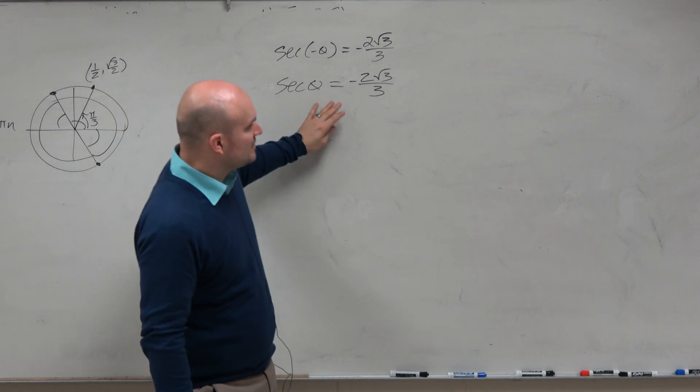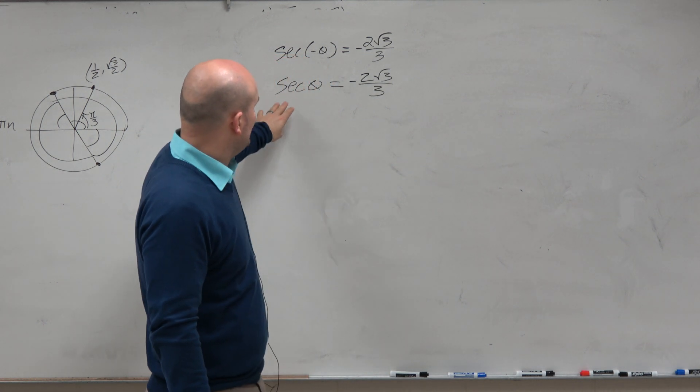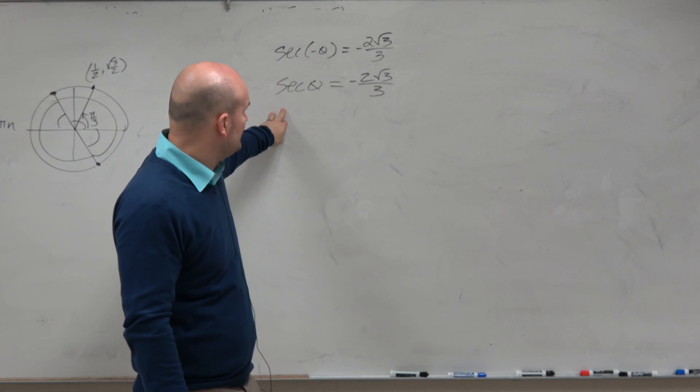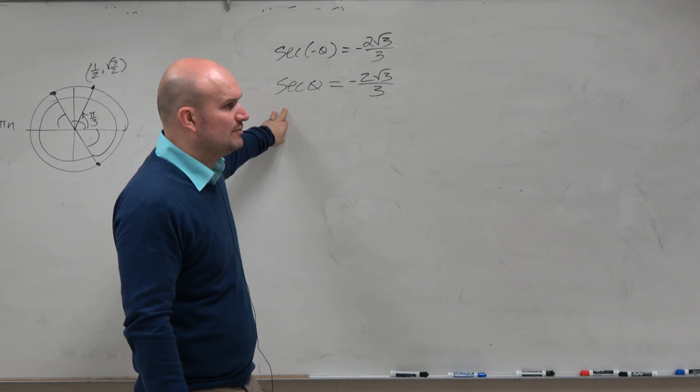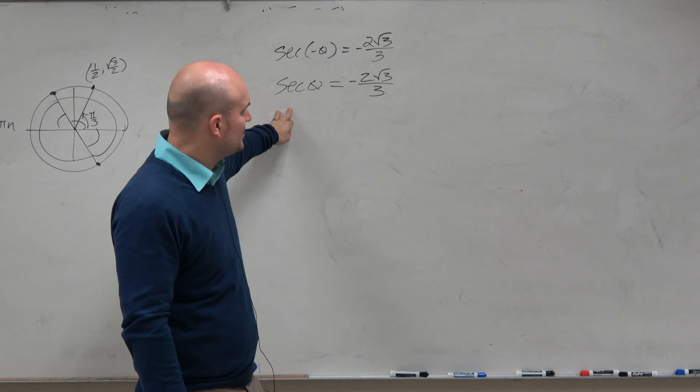Now, the important thing is, I showed you guys mathematically. Sometimes we can show this. But understand how we're going to do secant. I don't want to look at the unit circle and see when is 1 over x equal to negative 2 squared 3 over 3.